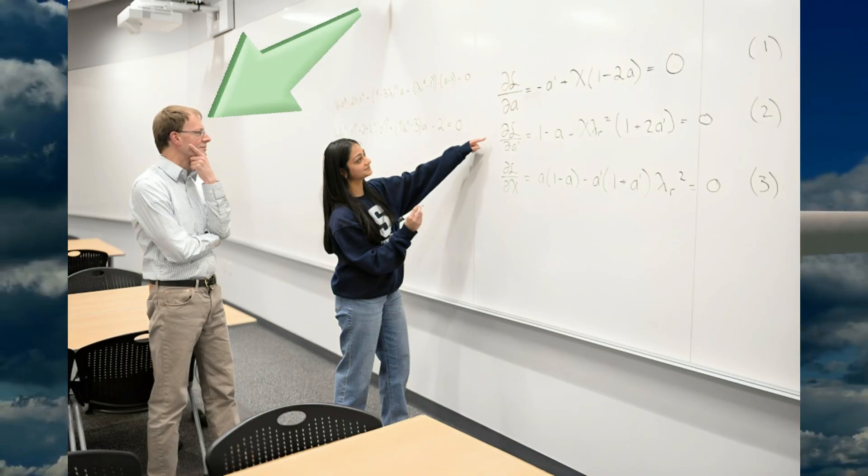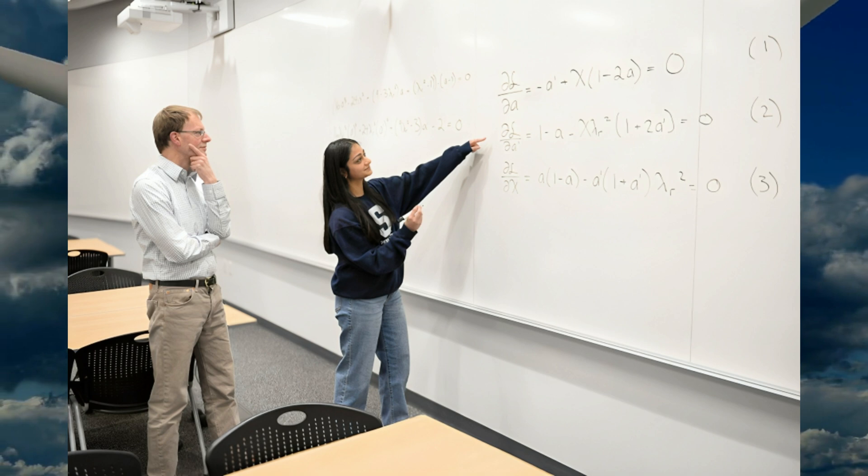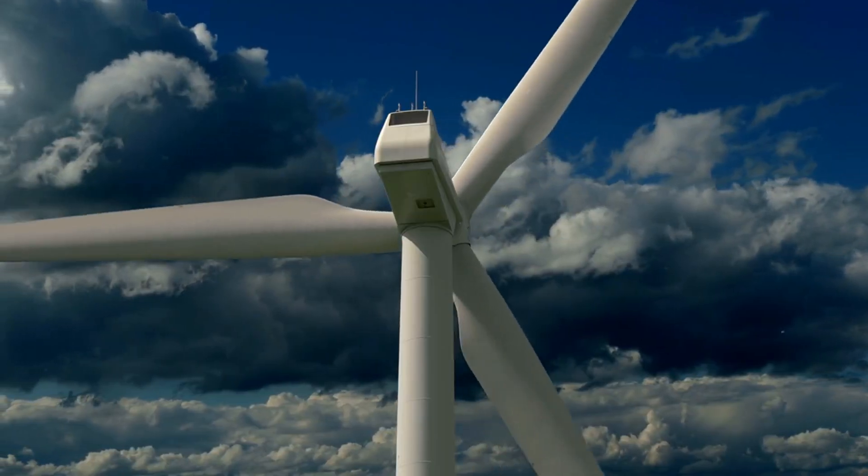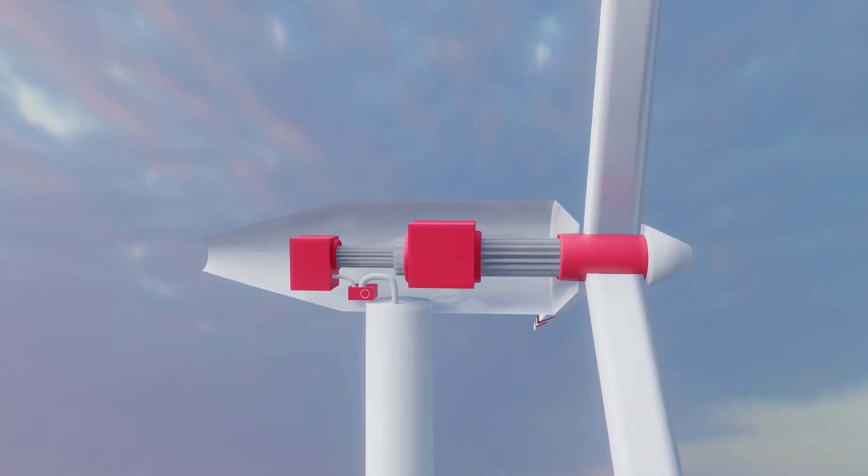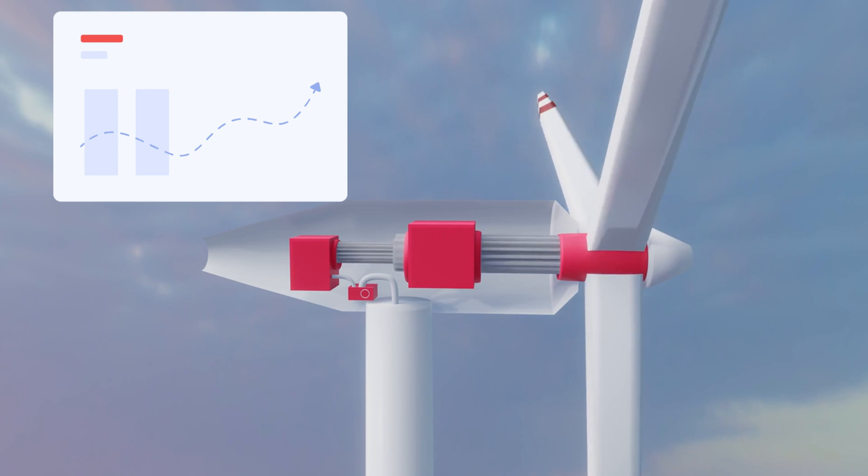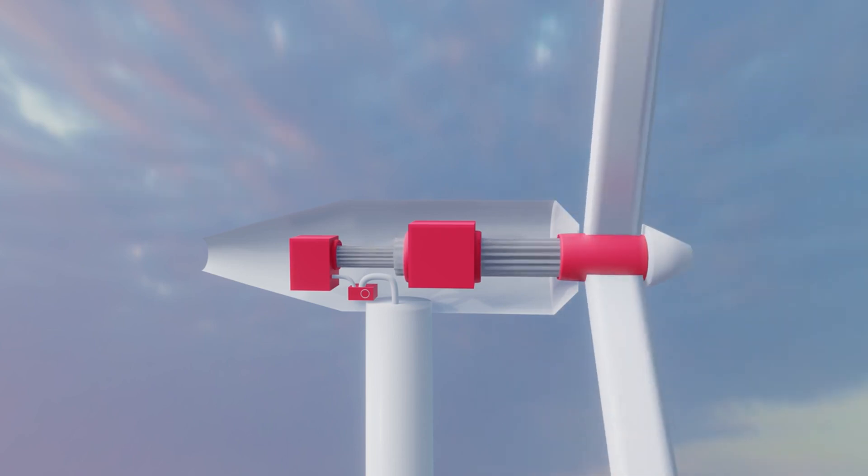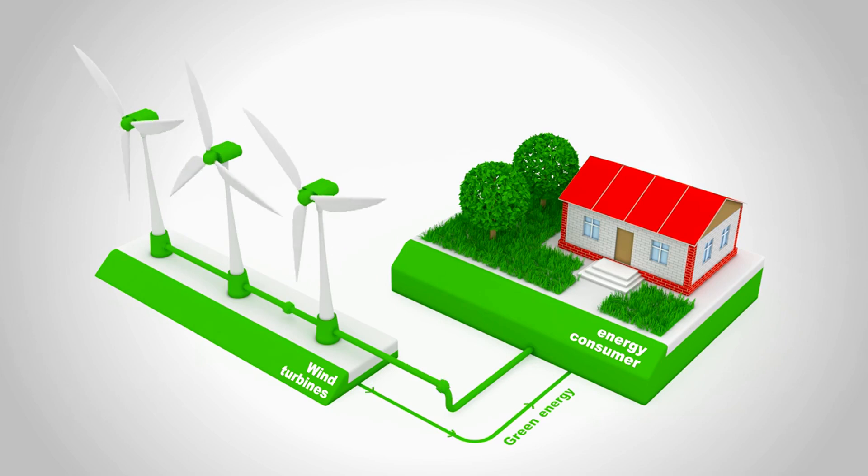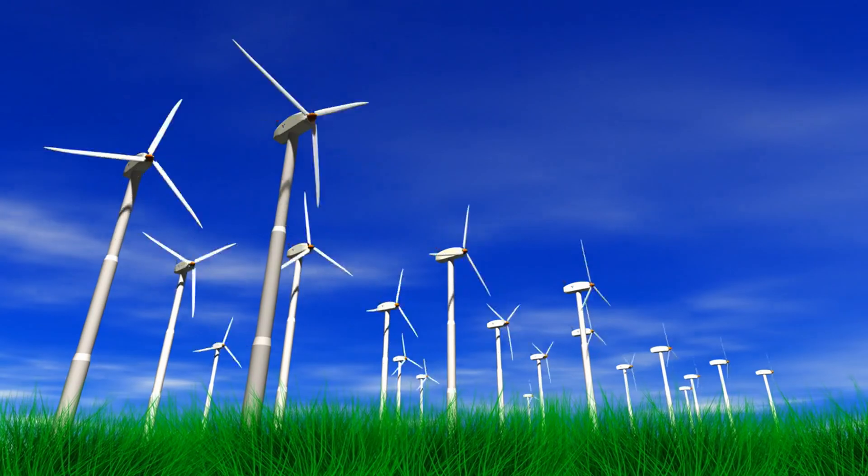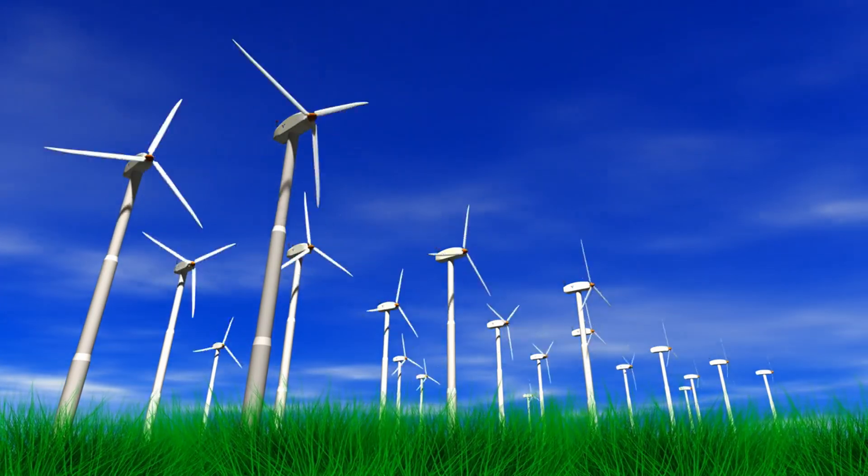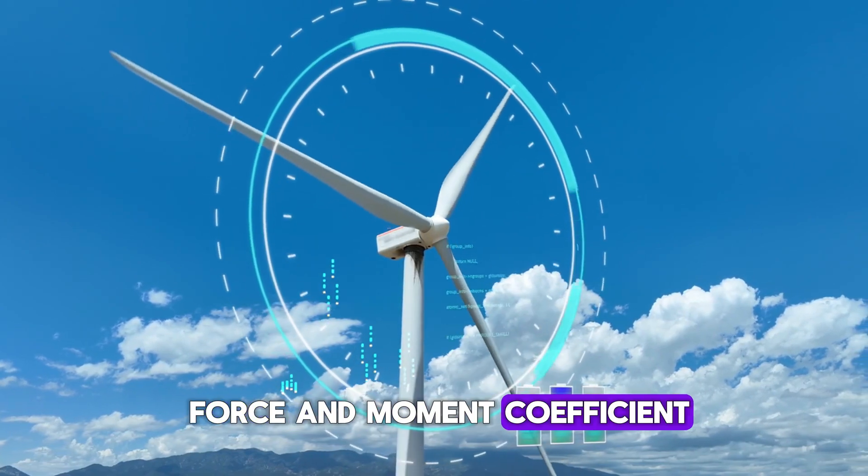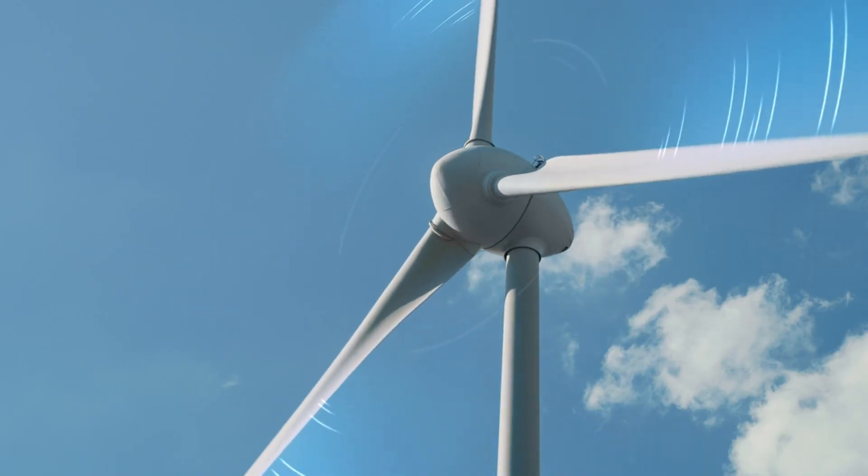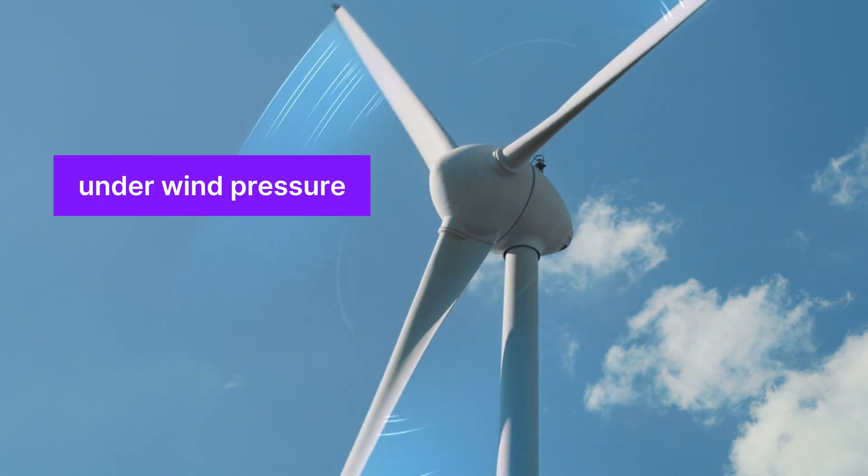Her faculty advisor, Sven Schmitz, the Boeing AD Welliver Professor in the Department of Aerospace Engineering and a co-author of the study, explained that while Glauert's original work focused on maximizing the power coefficient, a measure of how effectively a turbine converts wind into electricity, it didn't account for the full aerodynamic loading on the rotor. Specifically, it neglected the total force and moment coefficients and the structural bending experienced by turbine blades under wind pressure.